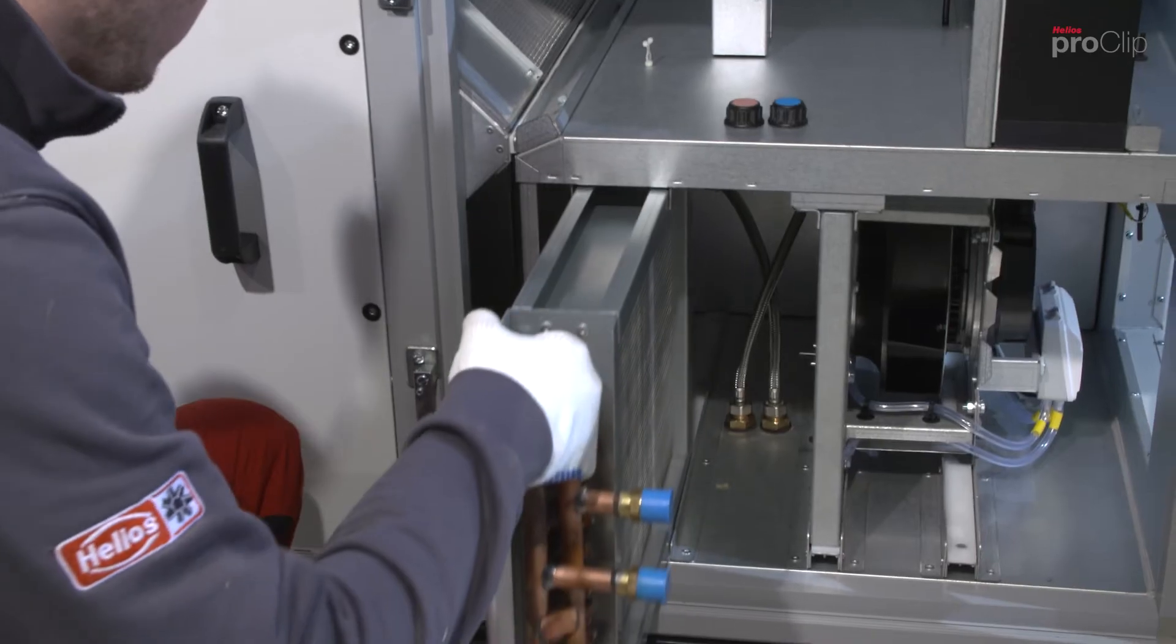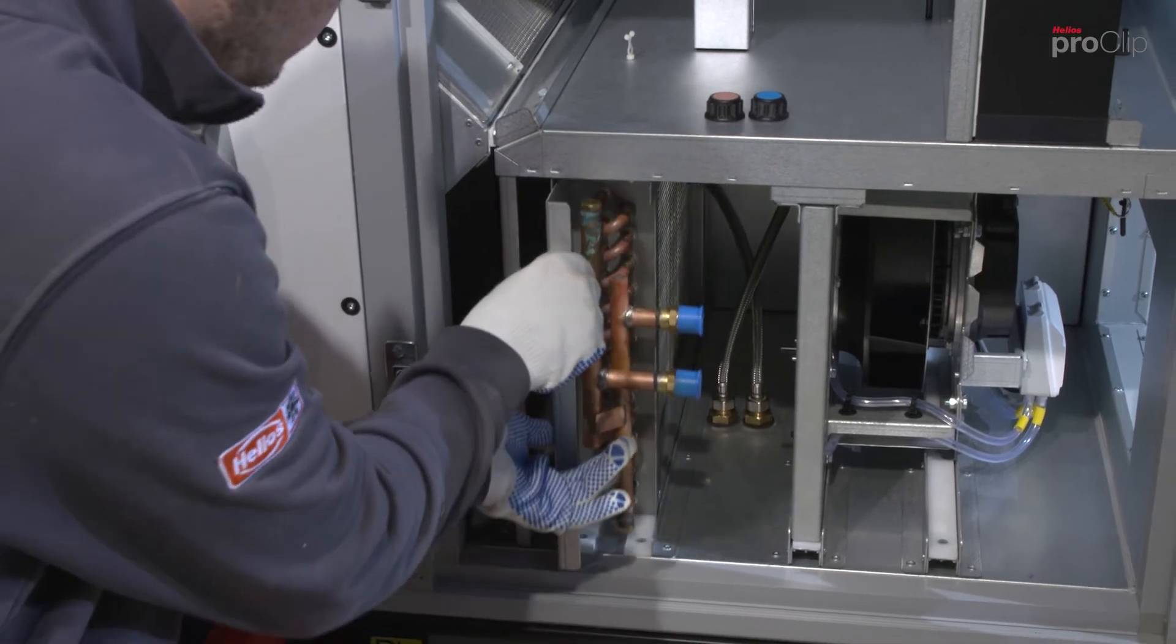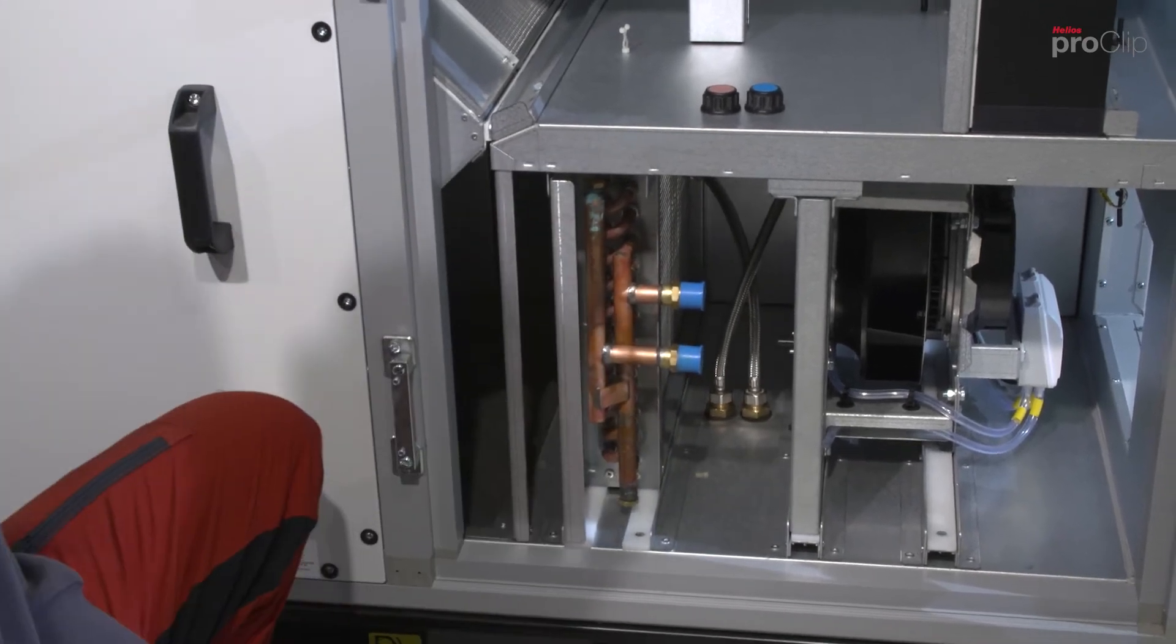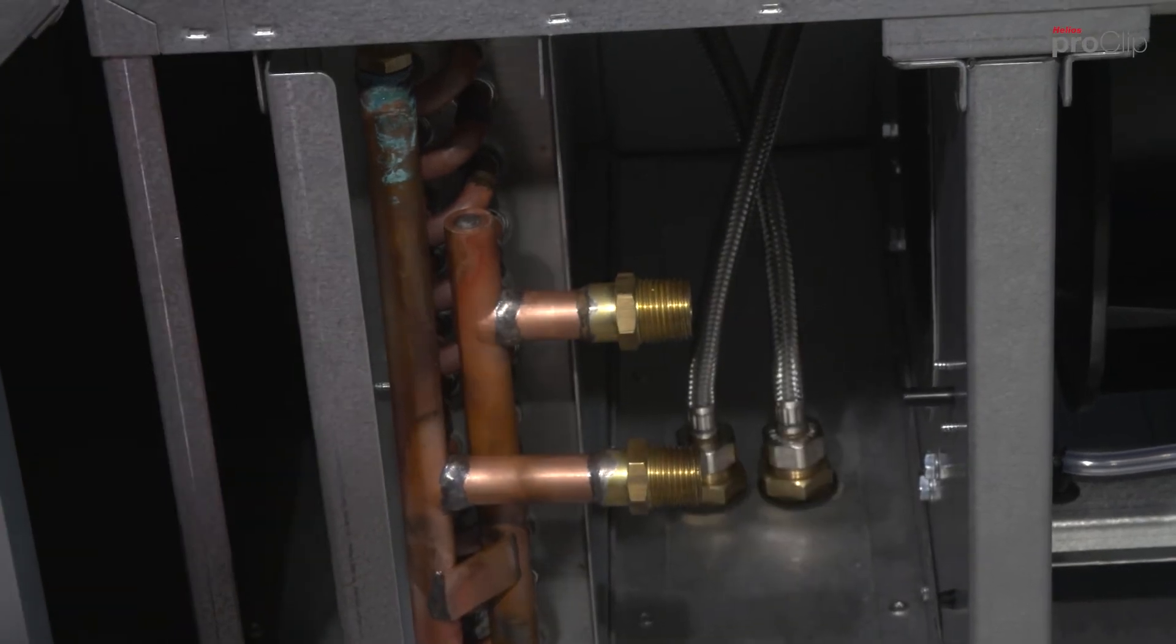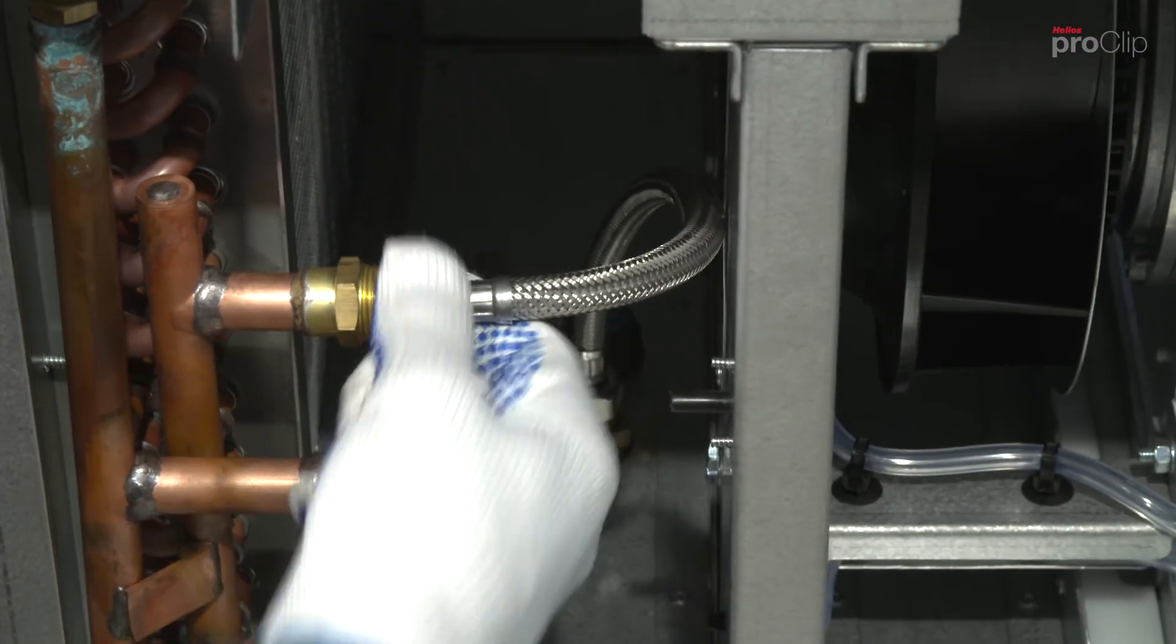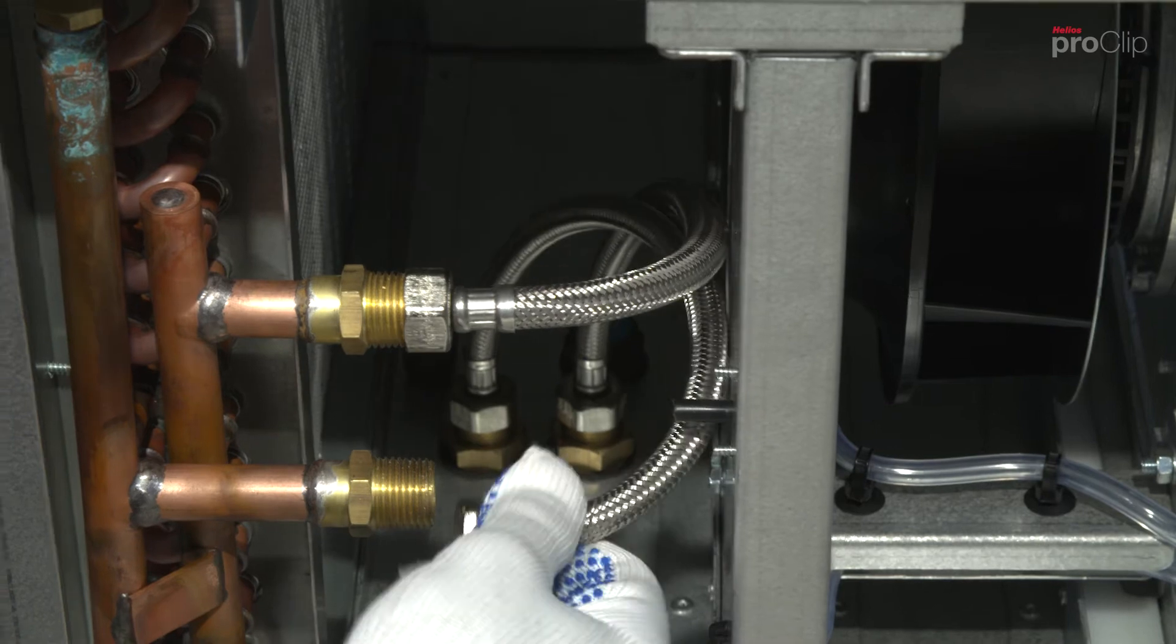Then insert the heating element into the unit. Make sure that the connection threads for the flexible tubes are located on the correct side. Now connect the flexible tubes to the connectors on the heating element.